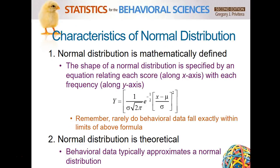Now some characteristics of a normal distribution — I know you're getting scared seeing this mathematical content. Don't worry — you don't have to know this formula. I just want you to read it to understand how it is mathematically defined. The shape of a normal distribution is specified by an equation relating each score along the x-axis with each frequency along the y-axis. And as I was saying, rarely does behavioral data fall exactly within the limits of a normal distribution.